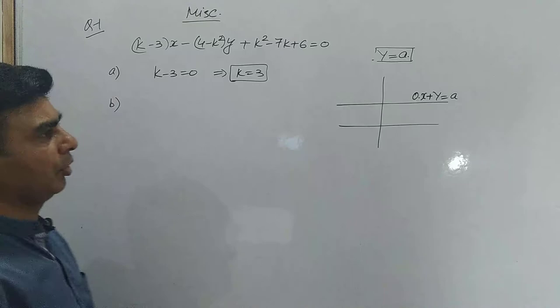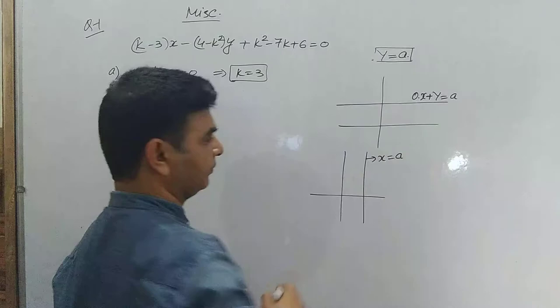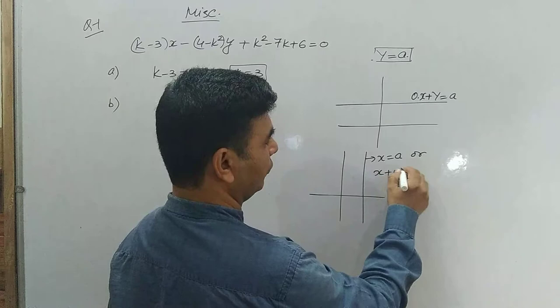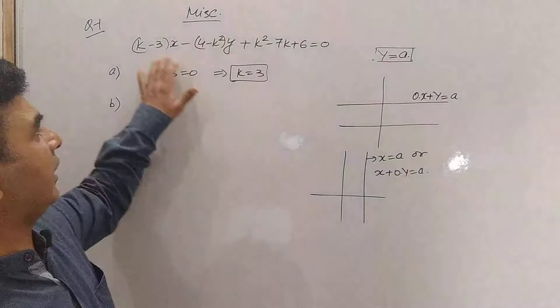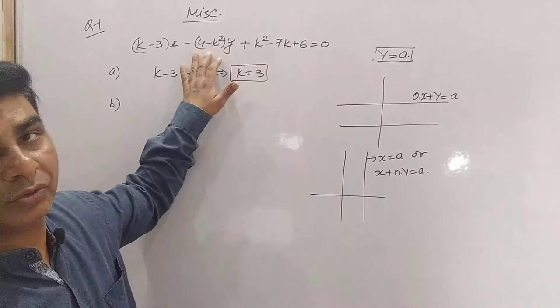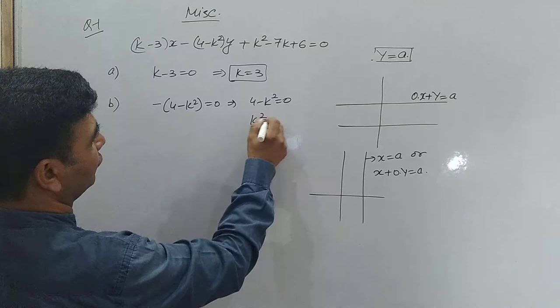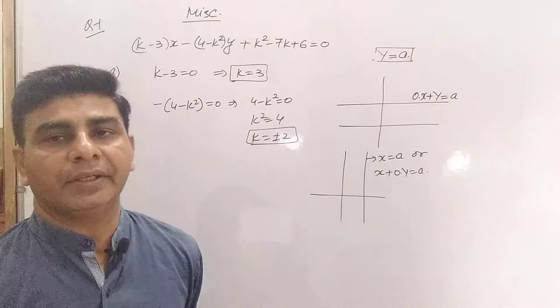For the second part, the line should be parallel to the y-axis. Any line parallel to the y-axis is given by x = a, written as x + 0·y = a, so the coefficient of y must be zero. This gives -(4 - k²) = 0, which means 4 - k² = 0, so k² = 4 and k = ±2. The value of k is ±2 for the line to be parallel to the y-axis.